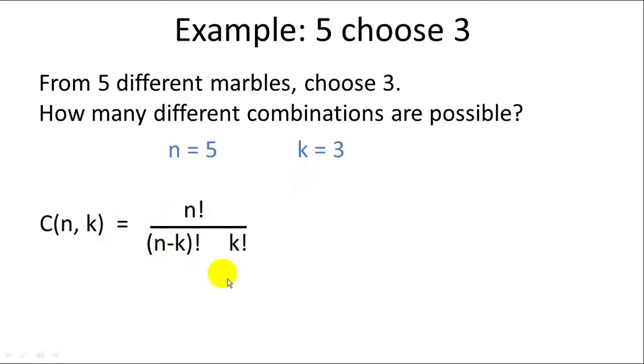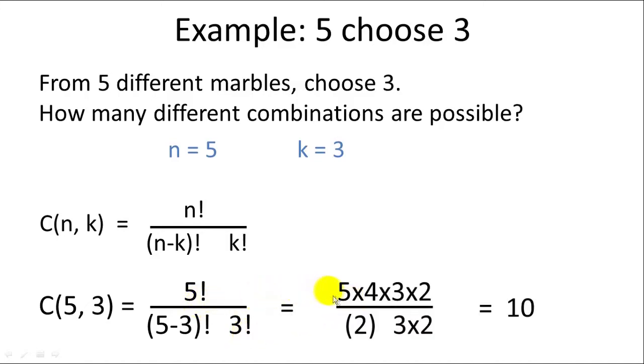So our formula is this. We're going to plug in n equals five and k equals three. And we get the number of possible combinations is five factorial over five minus three factorial times three factorial. And five factorial is equal to five times four times three times two.